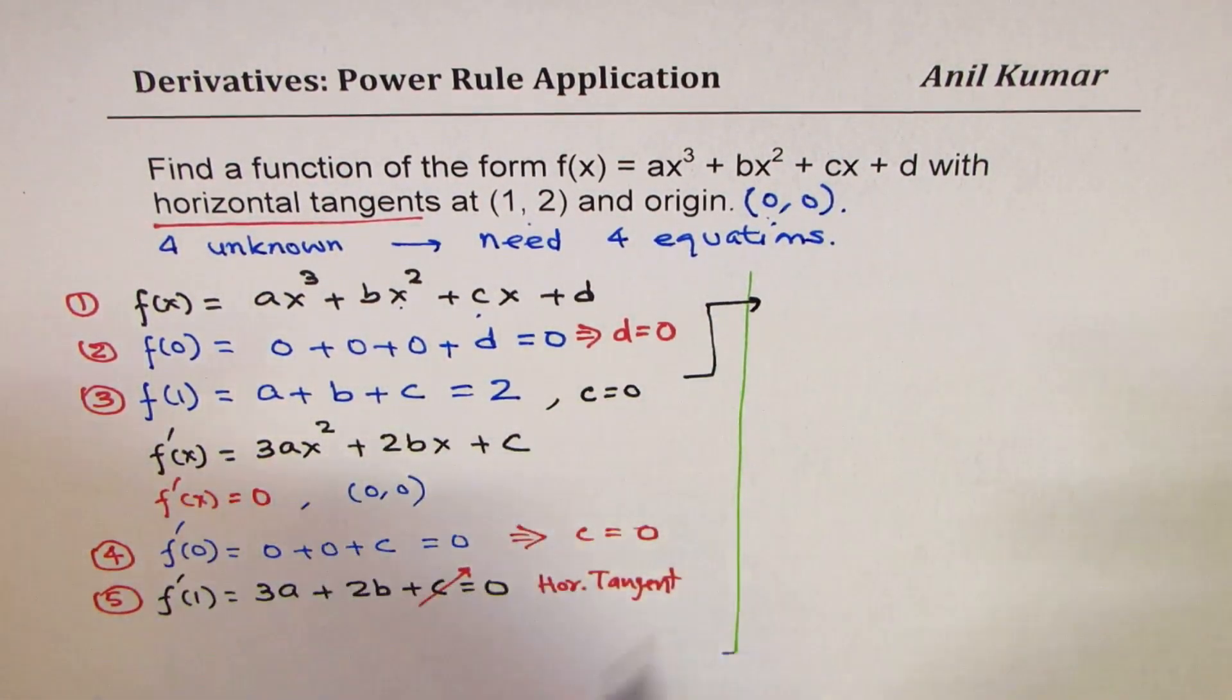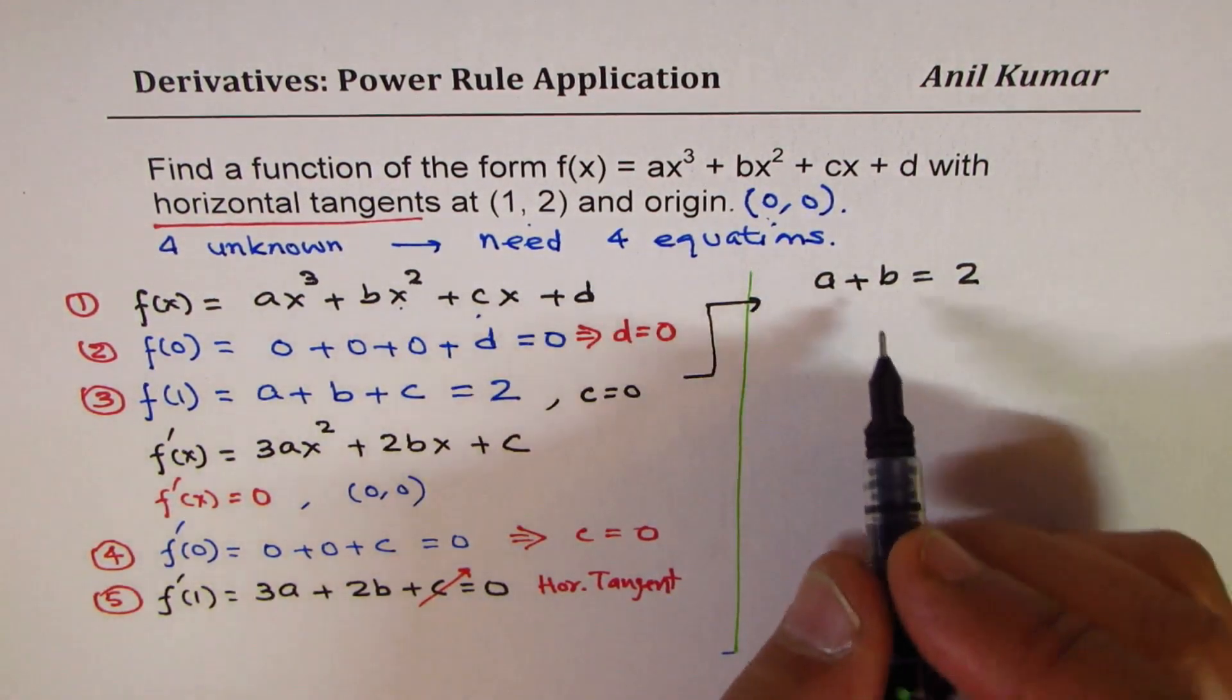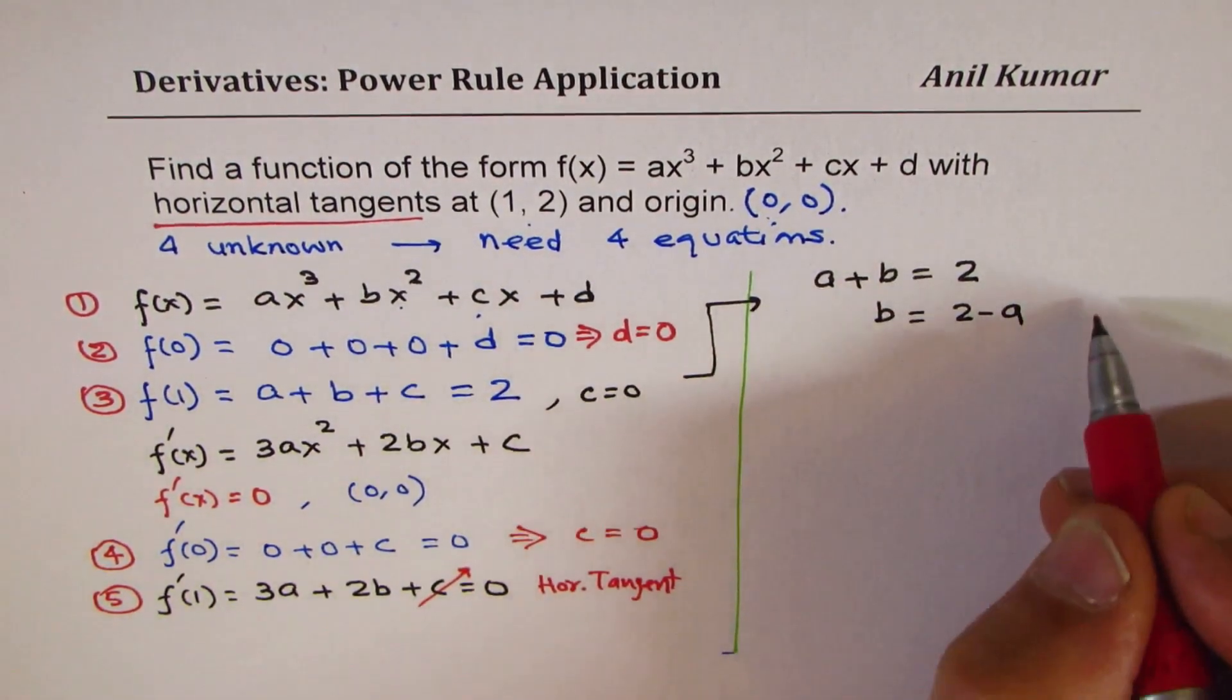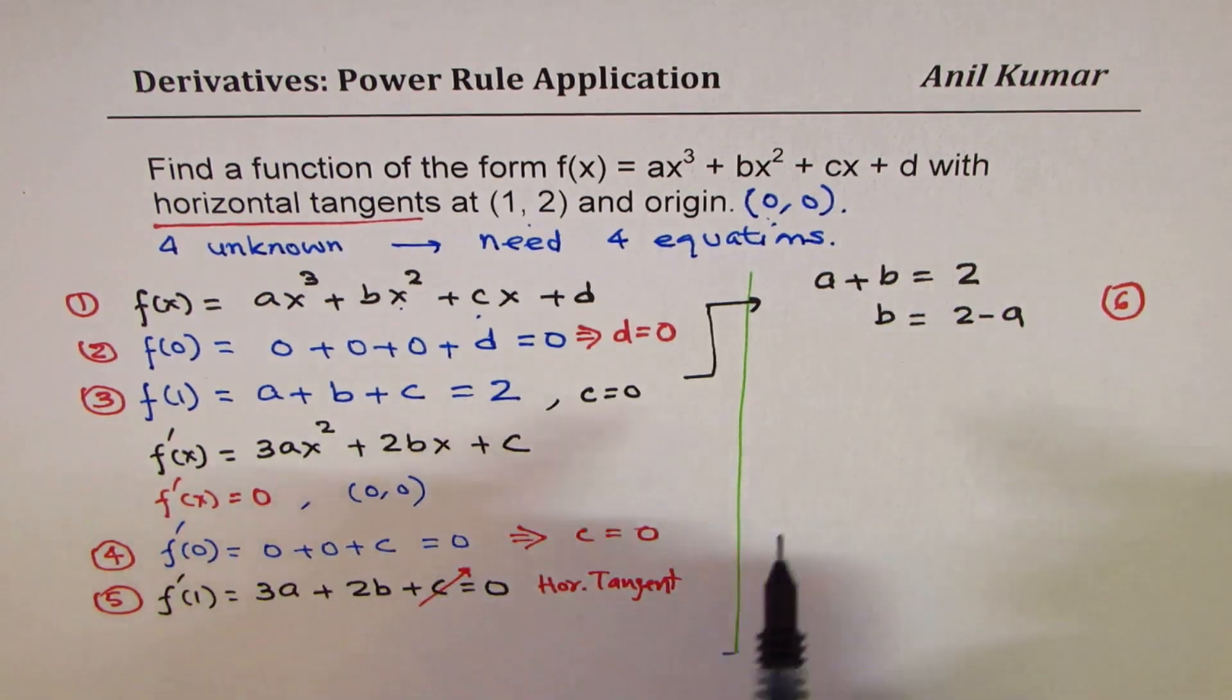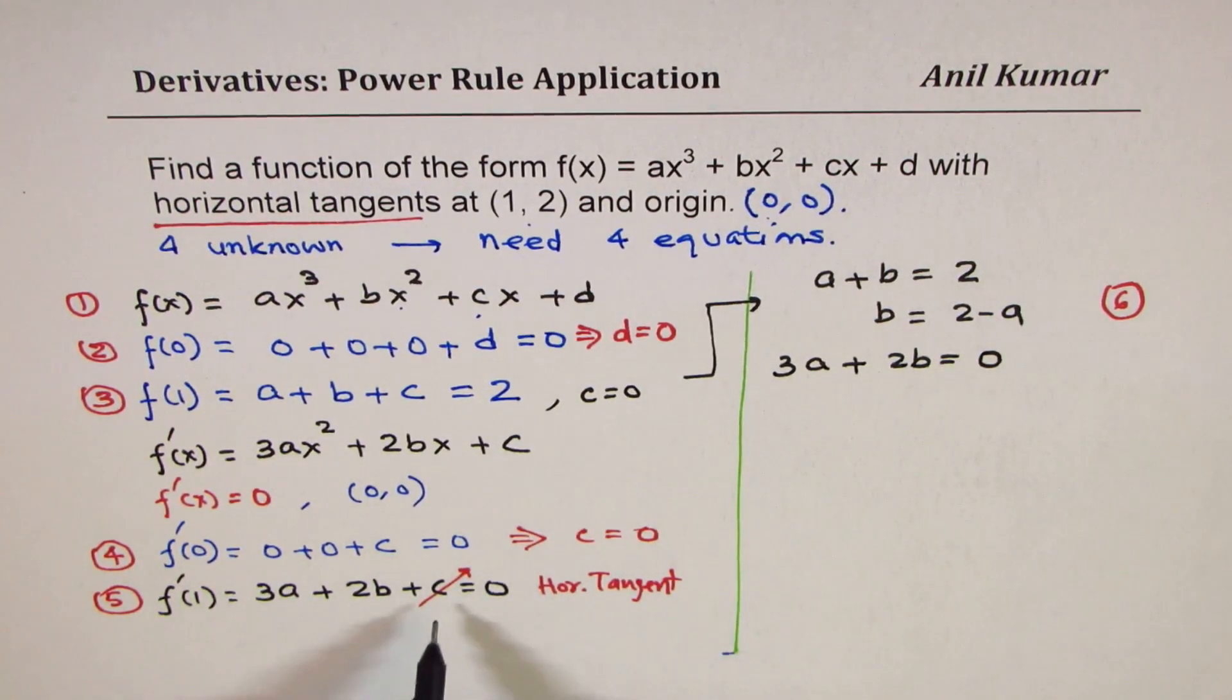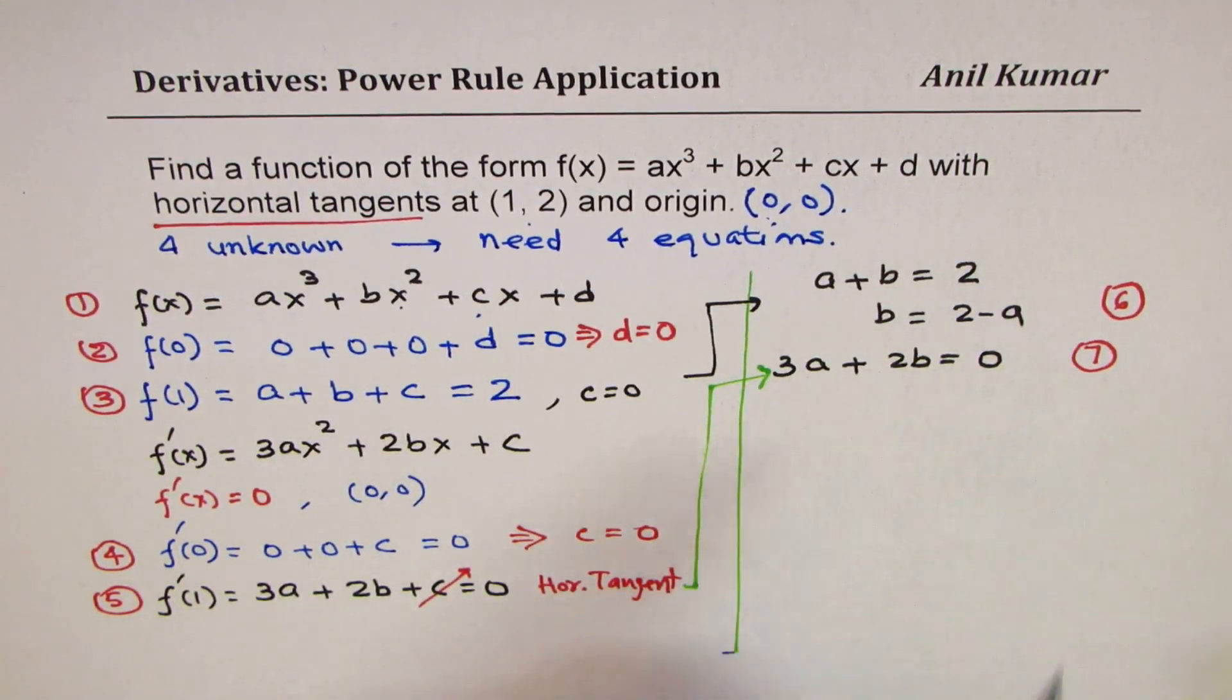So the two equations, let me rewrite these. Since c equals to 0, I am rewriting this equation as a plus b equals to 2. And then we could write b equals to 2 minus a. Let me call this as my equation number 6. And we have equation 3a plus 2b equals to 0. Since c is 0, I am writing this as my seventh equation.